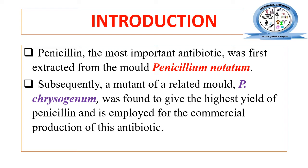Later on, the highest concentration yield was obtained from Penicillium chrysogenum. So in comparison to Penicillium notatum, the highest percentage yield of penicillin can be obtained from Penicillium chrysogenum, which was then used as the source for commercial antibiotic production. Later on, several synthetic derivatives were made by substitution of different functional groups in the basic structure of penicillin.